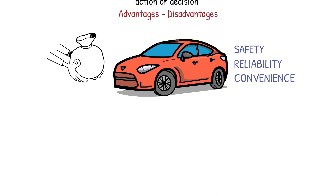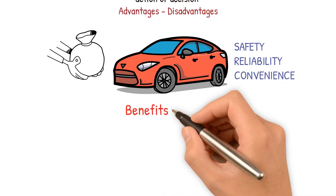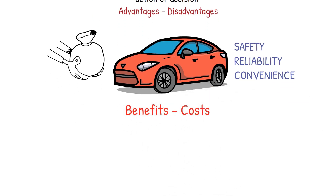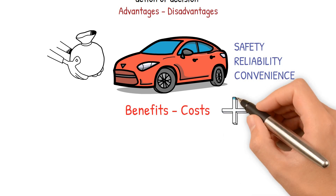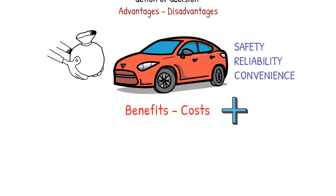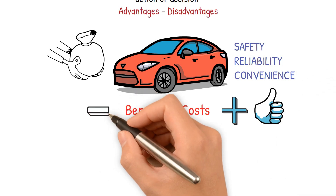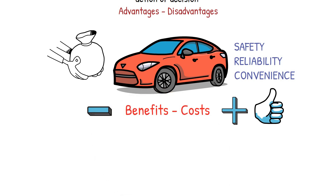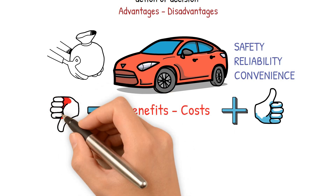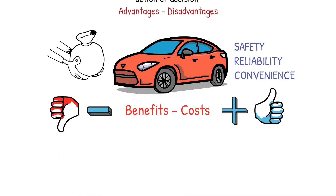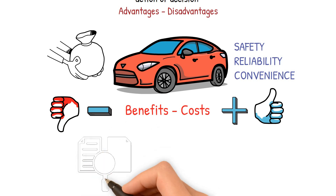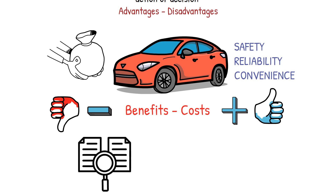To determine the net benefit of purchasing the car, you subtract the costs from the benefits. If the benefits exceed the costs, then the net benefit is positive and the decision to purchase the car is likely good. If the costs exceed the benefits, the net benefit is negative and the decision to purchase the car might not be good. The net benefit is a way of measuring the overall value of a decision by comparing the benefits to the costs.